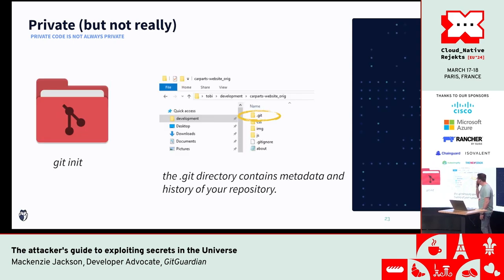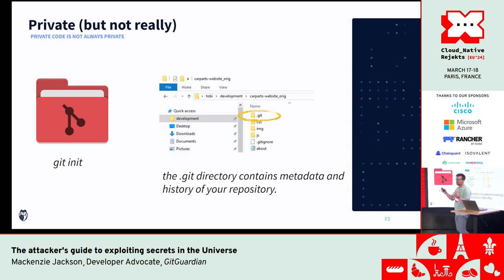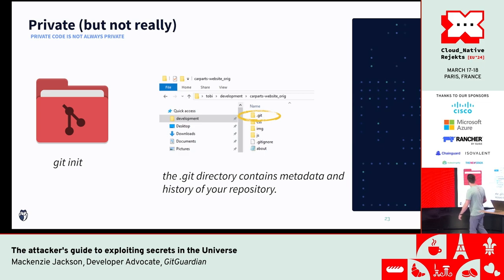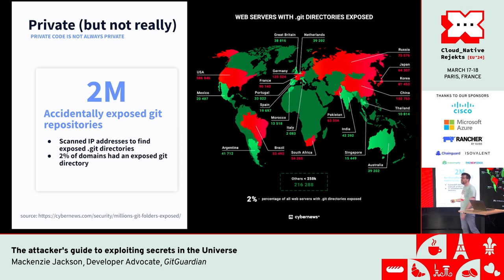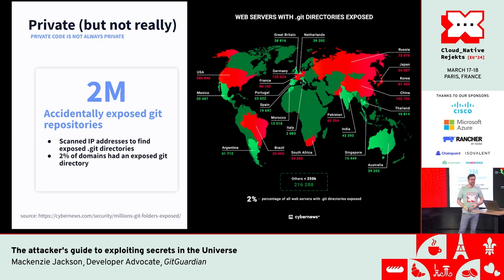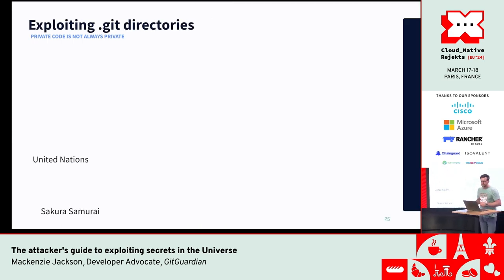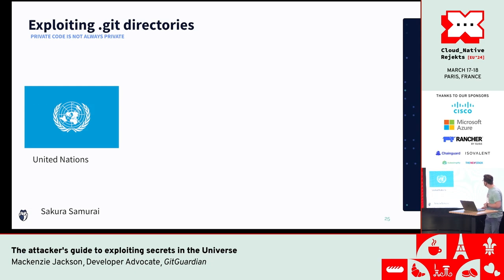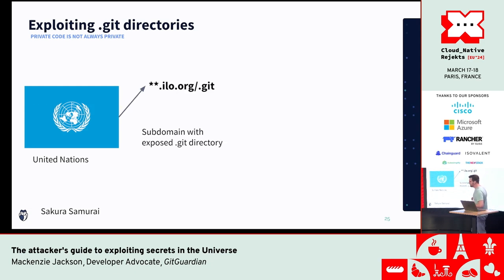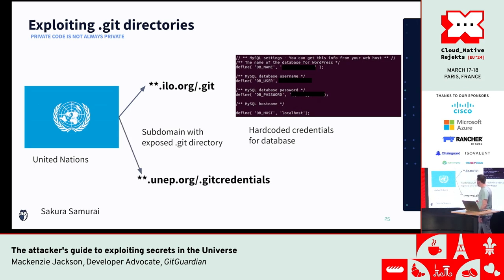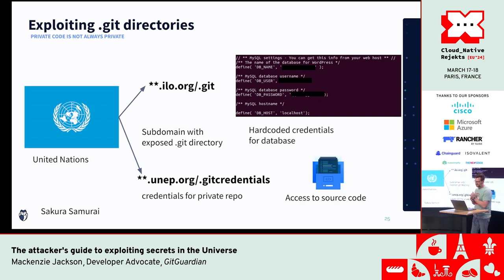Other areas are misconfigurations. Your .git folder is created when you run git init and stores all the metadata and history for your Git repository. Often this folder gets accidentally leaked out into the world. CyberNews did some scanning and found 2 million accidentally exposed .git directories. The United Nations had big breaches where they had a .git directory with hard-coded credentials and the .git credentials file publicly accessible, giving access to source code.